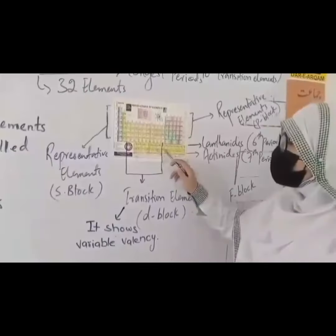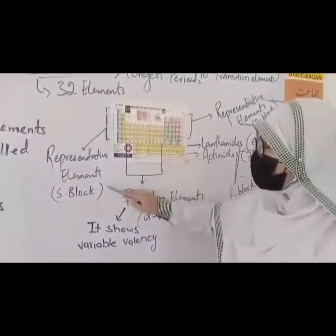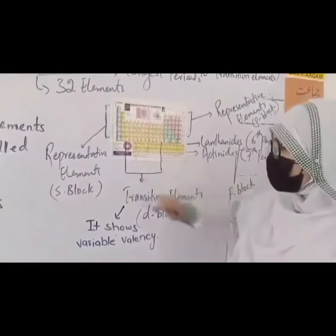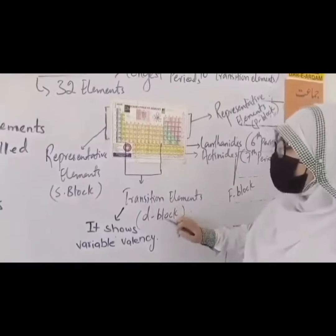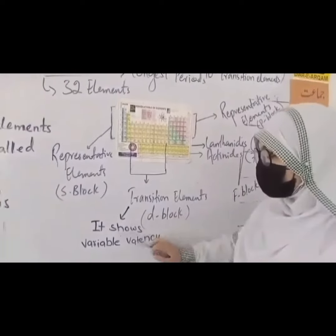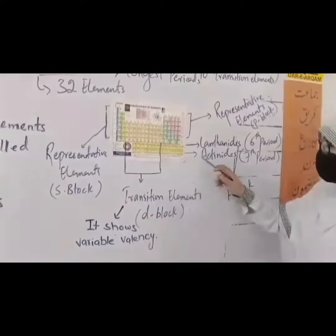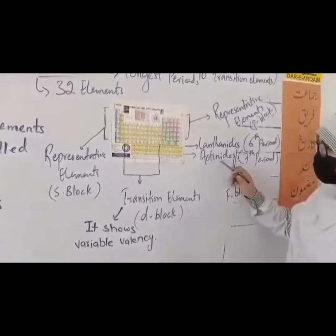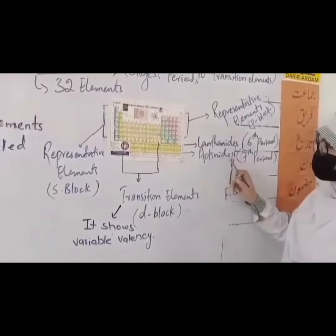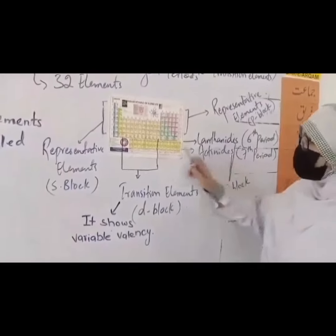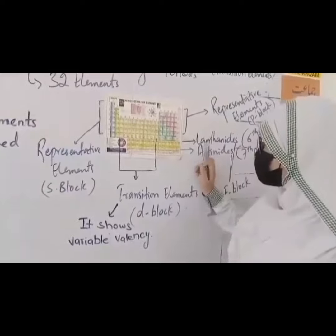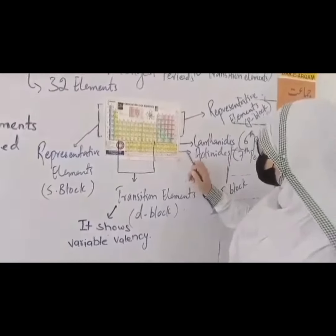Now we discuss the periodic table blocks. The s-block and p-block are representative elements. The d-block contains transitional elements, which show variable valency. The f-block contains the lanthanide series elements and the actinide series elements. This group is the lanthanide series and this group is the actinide series.